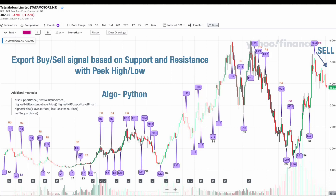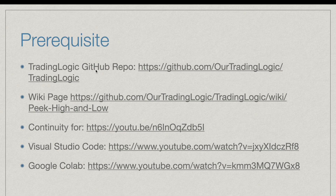Hello guys, welcome again. Here we will see how to export buy/sell signals based on support and resistance with the help of peak high/low values. Pre-requisites: please take the latest trading logic code from the GitHub link. For peak high and low logic, please find it in the wiki page. This is a continuity of my previous video, so please go through the previous video for context.